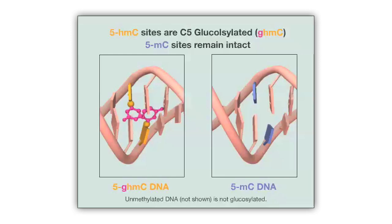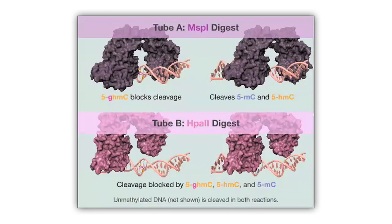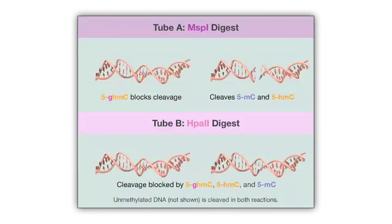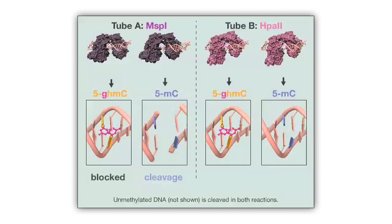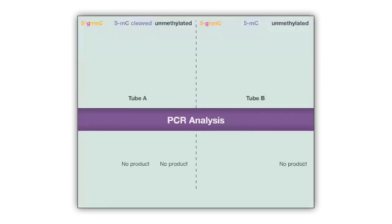As a second step, the genomic DNA is digested by the restriction enzymes MSP1 and HPA2, which utilize their differential methylation sensitivities to identify glucosylated 5-hydroxymethylcytosine sites. Next, PCR is used in order to interrogate the locus. Results are obtained that show the presence of 5-hydroxymethylcytosine in a specific locus.